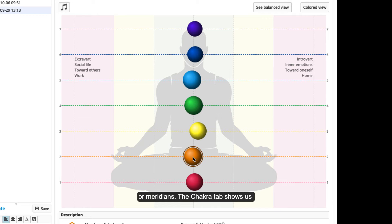The chakra tab shows us the wellness of our energy centers. The normal amount of energy for each center is four joules.